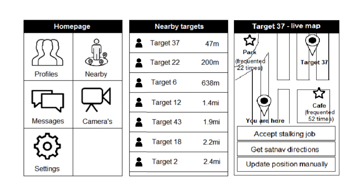If the user selects nearby targets, it brings up a list ordered by proximity. If the user clicks one of the targets, they are presented with a map of the target's exact location and commonly frequented locations, so the surveillance team member can be there before the target gets there, and various options include getting sat-nav directions straight to the target.